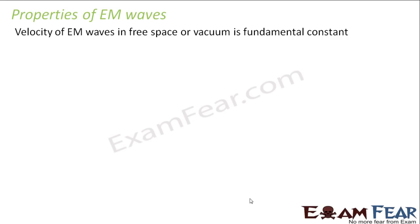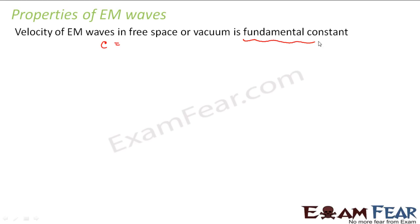The very first property we will discuss is that the velocity of electromagnetic waves in free space or vacuum is a fundamental constant. It was experimentally observed that the velocity of electromagnetic waves in free space was the same as the velocity of light, denoted by c, which is 3 × 10⁸ meters per second — that is a fundamental constant.